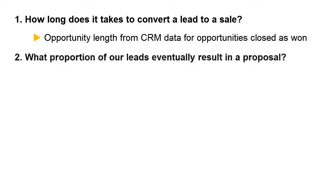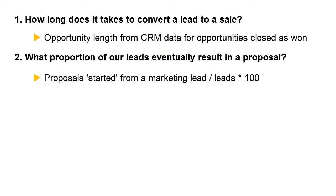Do we know what proportion of our leads eventually result in a proposal? Get a list of every lead generated last year and every proposal. Tick off all those proposals that we count as having started with one of those leads. Now I know you can get into a bit of a dogfight here about influenced leads versus created leads, but as long as you use that same basic rule each time when you're comparing yourself year over year, it doesn't matter. That's all you need.